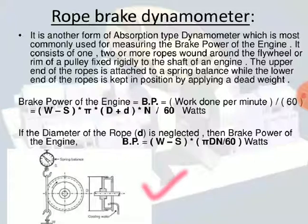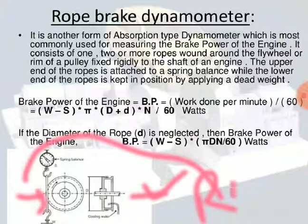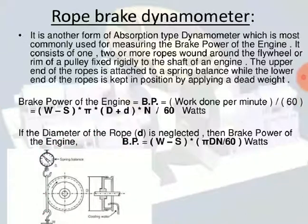Referring to the figure: the round section is the flywheel, and the rim of the pulley is completely rigid to the shaft. Cooling water is circulated to maintain the heat of the engine. A rope is wound around the flywheel. The upper section is a spring balance, and at the lower section a dead weight is attached to keep the rope in equilibrium.